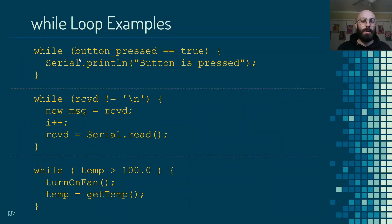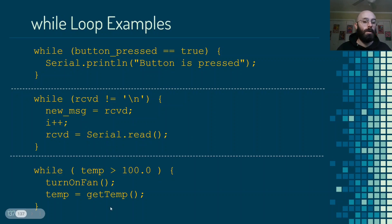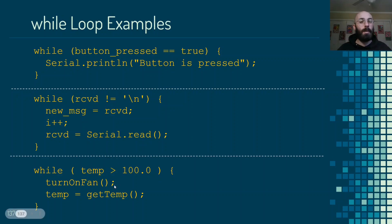Here are a few examples. We could say while buttonPressed equals true — though this would be an infinite loop because nothing inside changes that value. We could say while received does not equal backslash n, checking each character received and repeating until we see a newline. Or we could say while the temperature is greater than 100 degrees, call a function that turns on a fan and then get the temperature again. These are common use cases for while loops where we're not sure how many times we need to check or wait for something to happen.